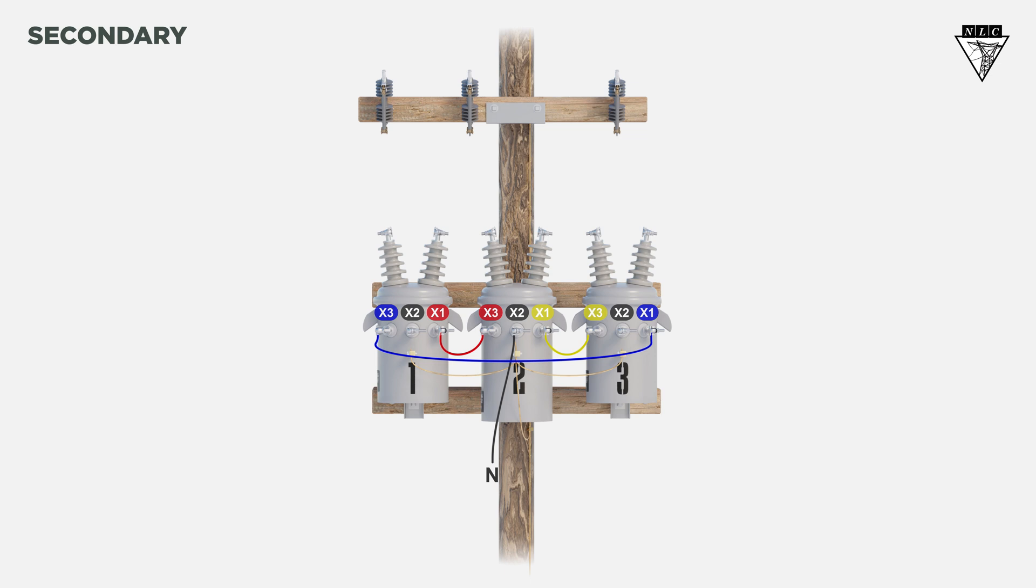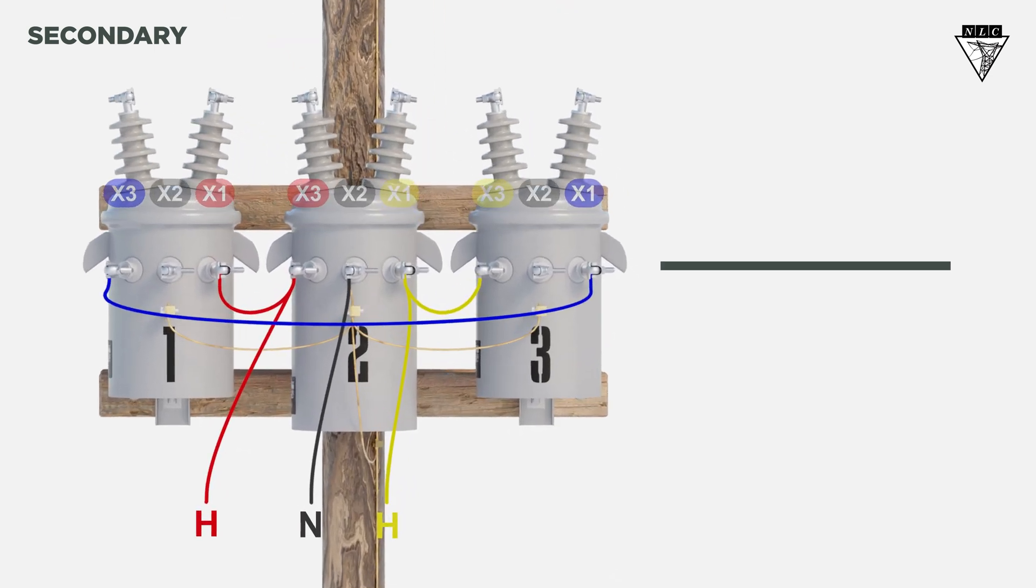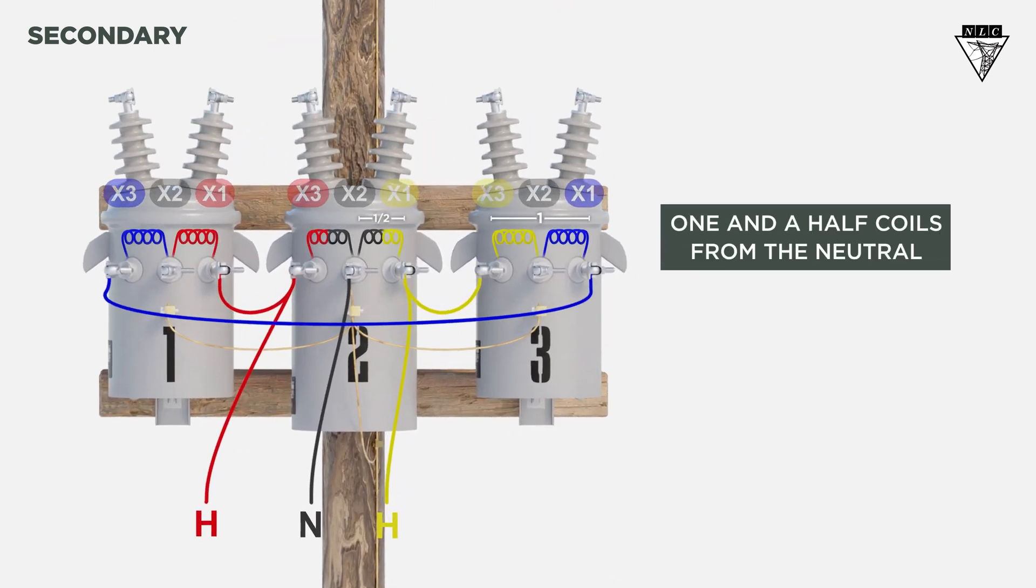Run the hot legs from the X3 and X1 of the lighter transformer. Finally, place the power leg one and a half coils from the neutral. For this example, we'll use the X1 bushing on the third transformer. This is now our power transformer.